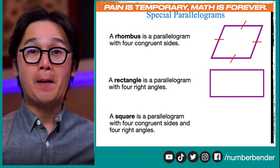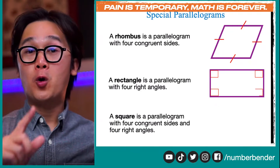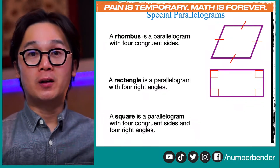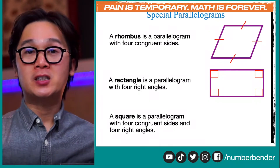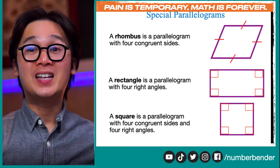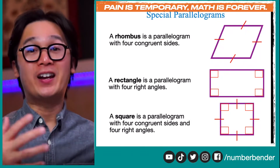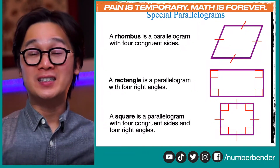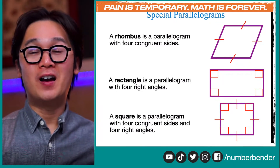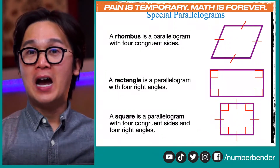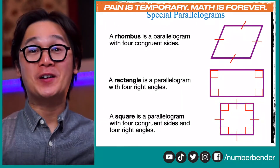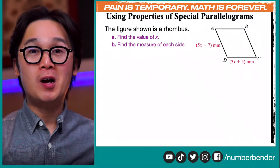We know what a rectangle is, but we also need to know that in a rectangle, all four corners are congruent and they are all right angles. So that is the special property of a rectangle. And for a square, the special property is that the corners are congruent and the sides are also congruent. Another special property of a square is that their corners — angles A, B, C, D — will be equal to 90 degrees because they are all right angles. So these are the properties of our three special parallelograms: rhombus, rectangle, and square.